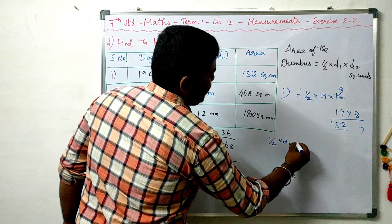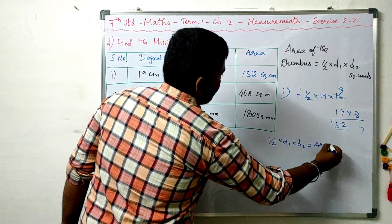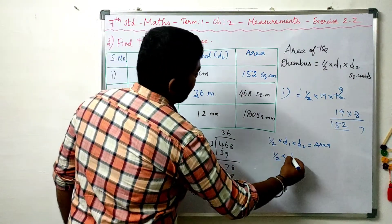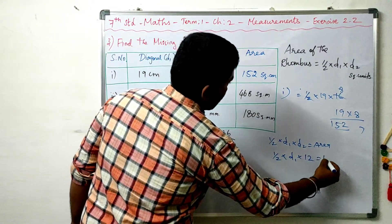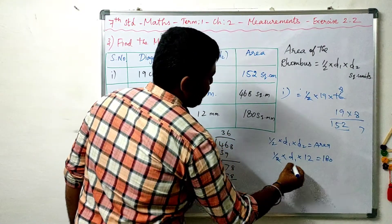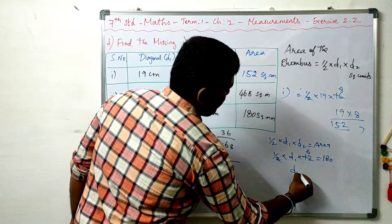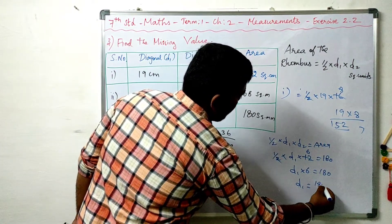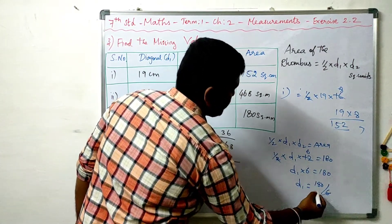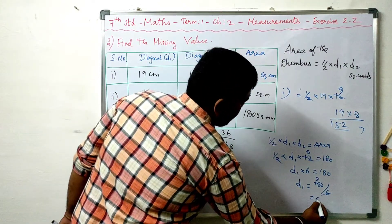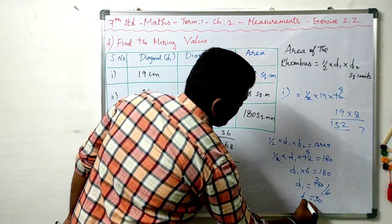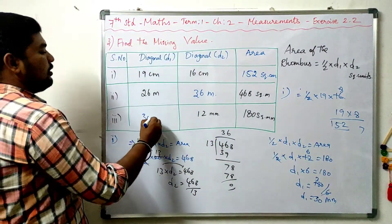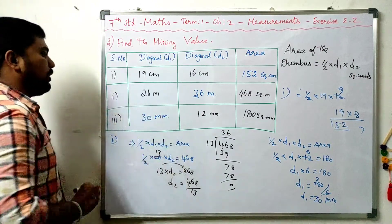For the third entry: half into D1 into D2 = area. D2 is 12 and area is 180. Cancel: 1 two is 2, 6 twos are 12. So D1 into 6 = 180. D1 = 180 divided by 6 = 30. The unit is millimeter. So D1 = 30 millimeters.